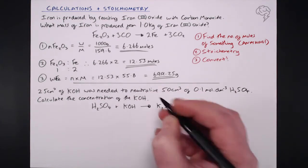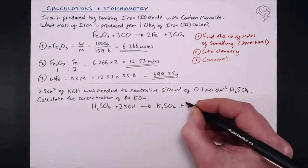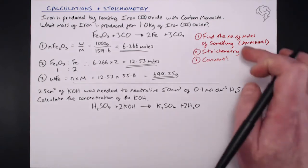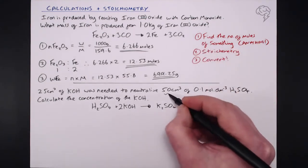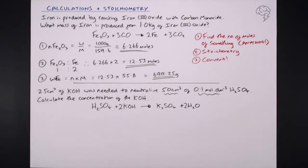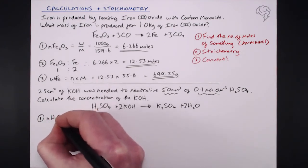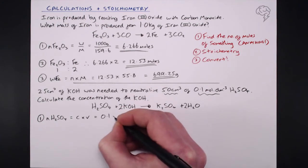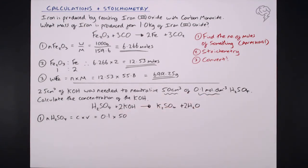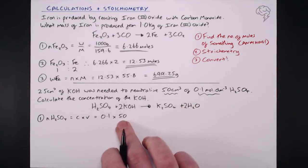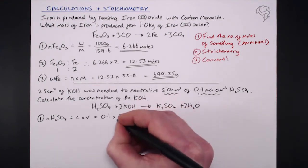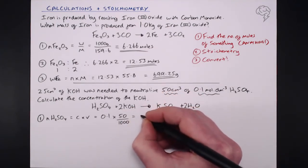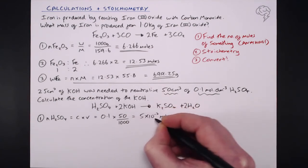We need two potassiums on the product side, and balancing hydrogens and oxygens gives two waters. Step one: find the number of moles of H2SO4. Moles = concentration × volume = 0.1 mol/dm³ × (50 ÷ 1000) dm³. Do not forget to convert cm³ to dm³ by dividing by 1000. The number of moles of sulfuric acid is 5 × 10⁻³ mol.